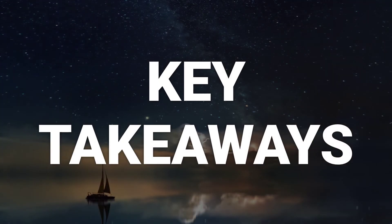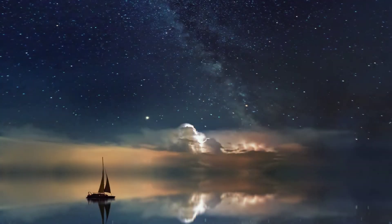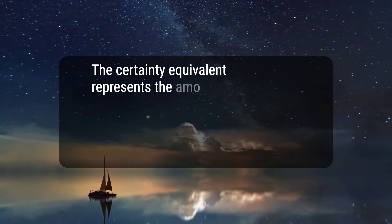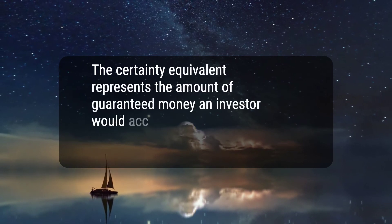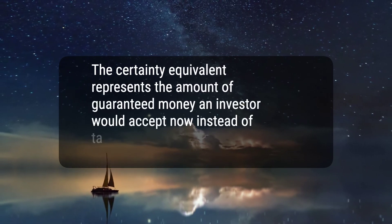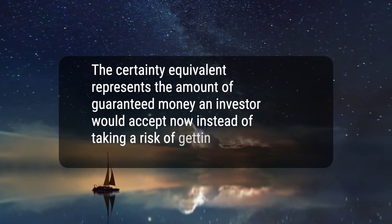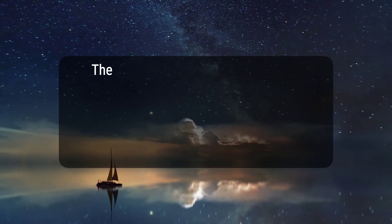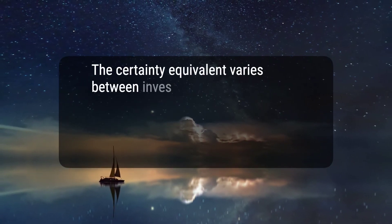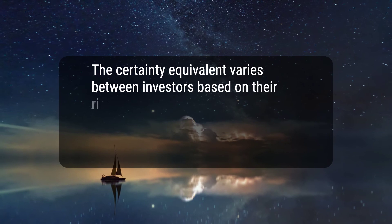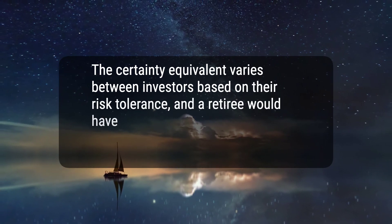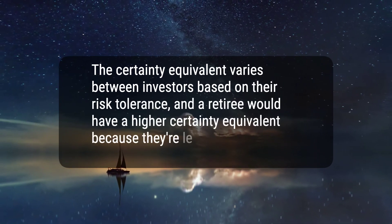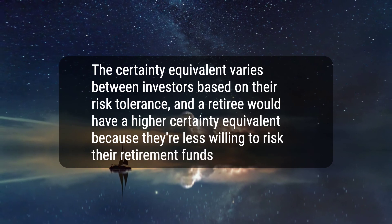Here are three key takeaways. 1. The certainty equivalent represents the amount of guaranteed money an investor would accept now instead of taking a risk of getting more money at a future date. 2. The certainty equivalent varies between investors based on their risk tolerance, and a retiree would have a higher certainty equivalent because they're less willing to risk their retirement funds.